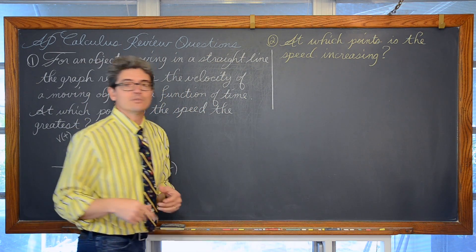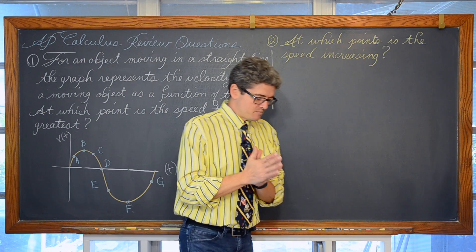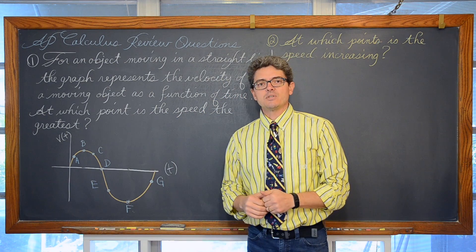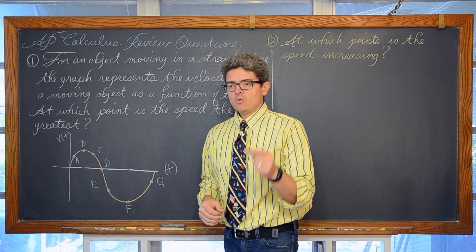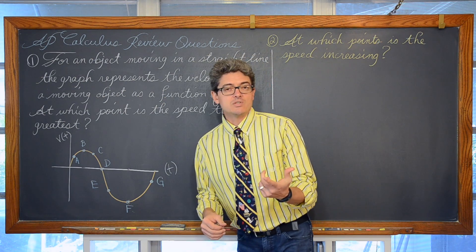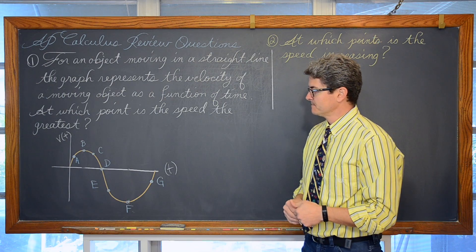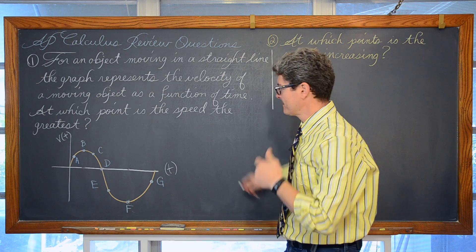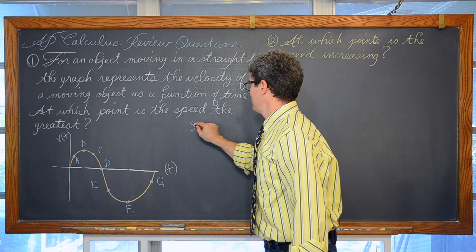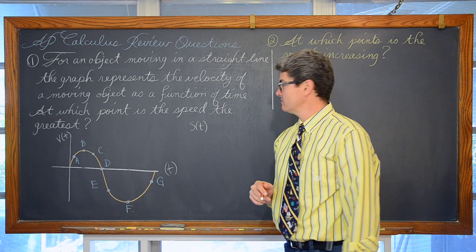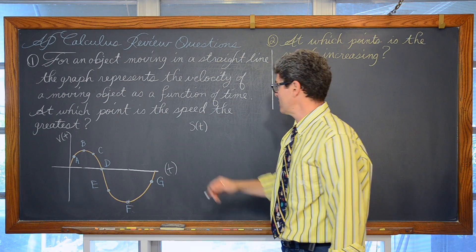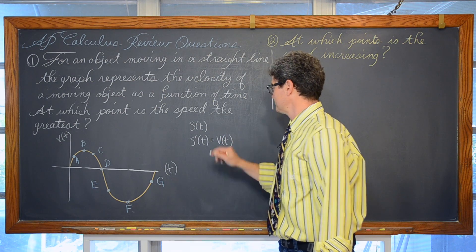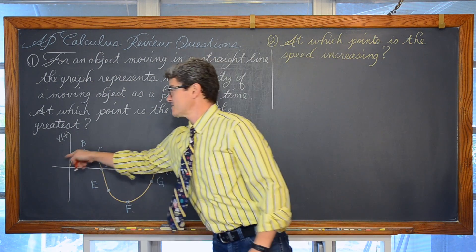At which points is the speed increasing? Well when does the speed of an object increase? The speed of an object increases when the velocity and acceleration have the same sign. So s is normally referred to as the position function. So s prime of t is equal to velocity. And this is the velocity function, right? We were told that this graph represents the velocity, not the position of the object.